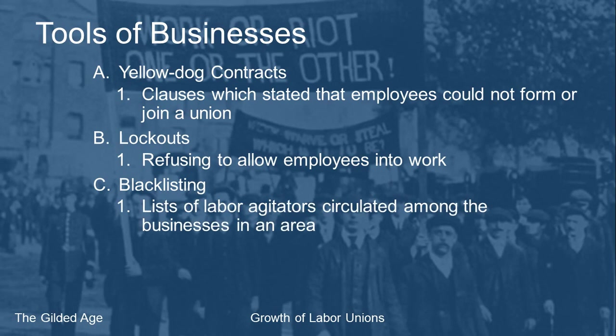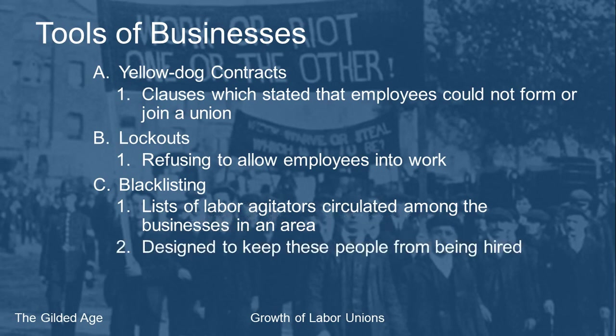Once they found out who was trying to form unions or causing problems, the business would put them on a blacklist — a list circulated around the area among businesses. Here is John Smith, he is on the blacklist — don't hire him because he causes problems in your factory. They tried to keep these people from getting jobs, because if you've silenced the labor organizer and left him unemployed, you avoid all that trouble.